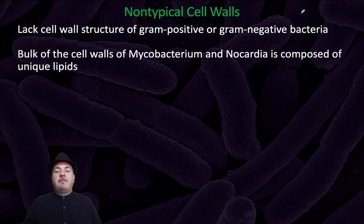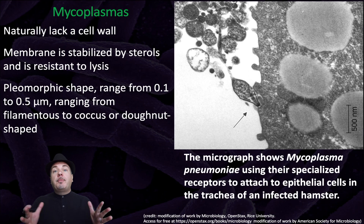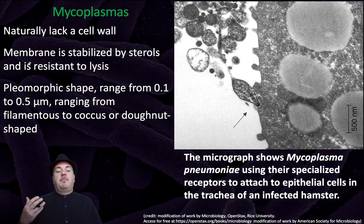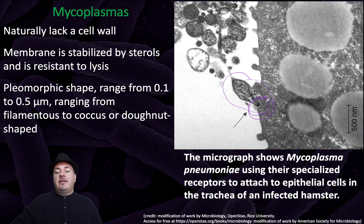In addition to gram-positive or gram-negative bacteria, we also have non-typical cell walls — cells that lack the cell wall structure of gram-positive or gram-negative bacteria. The bulk of the cell wall of mycobacterium and nocardia is composed of unique lipids. Mycoplasmas naturally lack a cell wall entirely. Because they don't have that thick peptidoglycan layer, what prevents them from taking in too much water and lysing or breaking open? Instead, they have sterols embedded in their membrane, which helps them be resistant to lysis. They come in many different shapes, ranging from 0.1 to 0.5 micrometers, from filaments to cocci shapes or donut-shaped. Here's an example of mycoplasma that can cause pneumonia, using a specialized receptor to attach to epithelial cells in the trachea of an infected hamster.